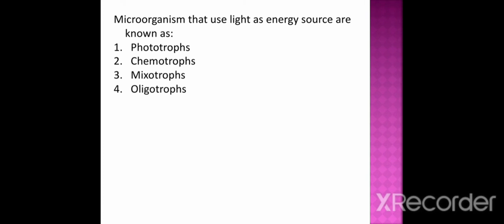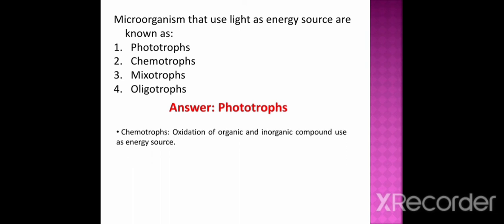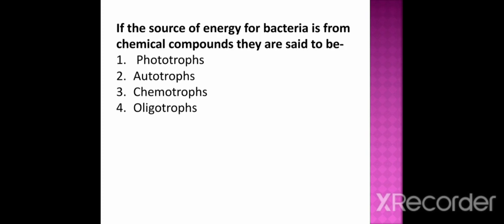Next question: microorganisms that use light as an energy source are known as option 1 phototrophs, option 2 chemotrophs, option 3 myxotrophs, option 4 oligotrophs. The correct option is phototrophs — 'photo' means light. Chemotrophs are microorganisms that use oxidation of organic or inorganic compounds as their energy source. If the source of energy for bacteria is from chemical compounds, they are said to be chemotrophs. Oligotrophs are microorganisms that grow in extremely nutritionally deficient conditions where the concentration of organic substances is low.